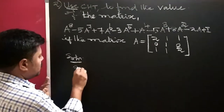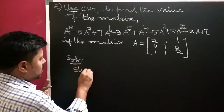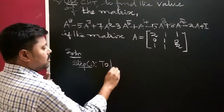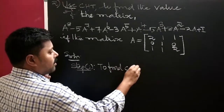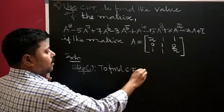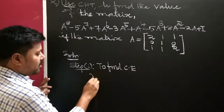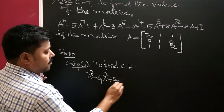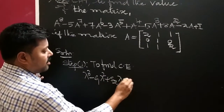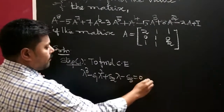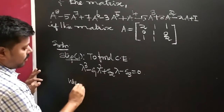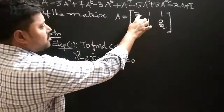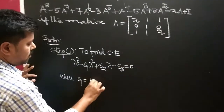For this type of problem, first find the characteristic equation. The characteristic equation is lambda cubed minus S1 lambda squared plus S2 lambda minus S3 equal to zero. S1 is the sum of the main diagonal elements: 2, 3, 5.